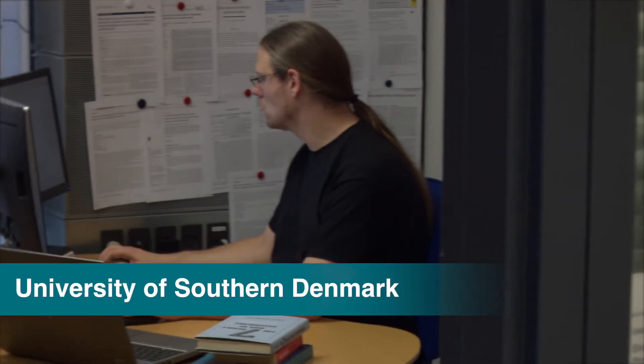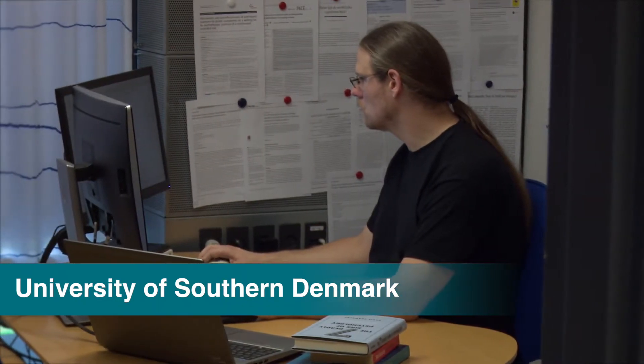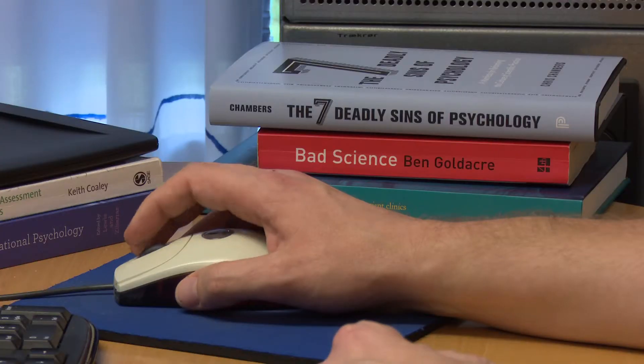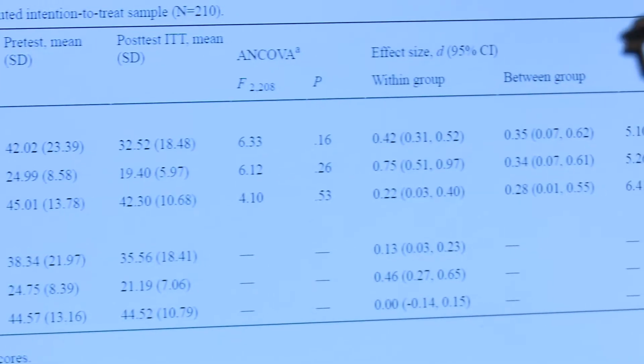I think good research data management can help prevent something we call sloppy science. That's not necessarily research misconduct, but those are honest mistakes that were made. So if you have a good structure in which you keep and manage your data, it's much easier to stop yourself from making mistakes that other people might think are research misconduct.